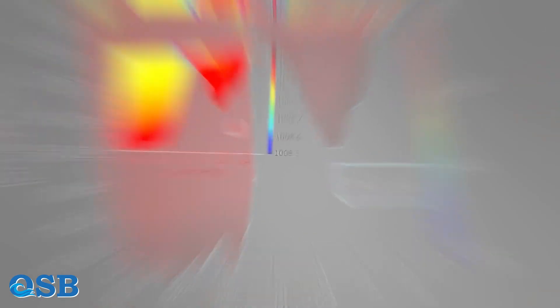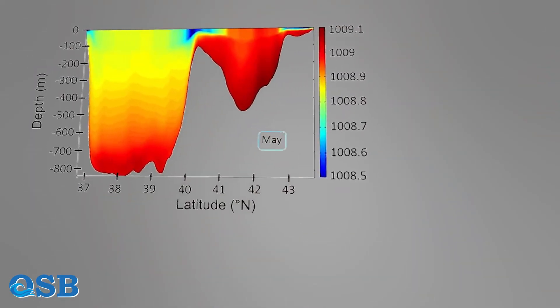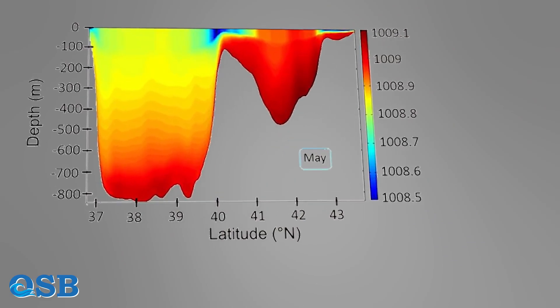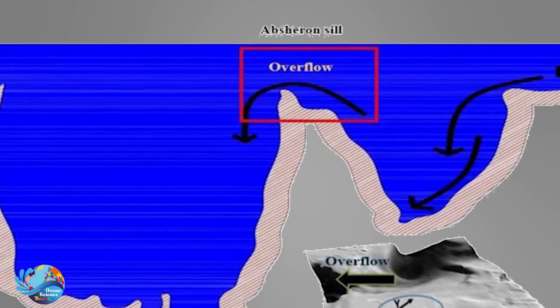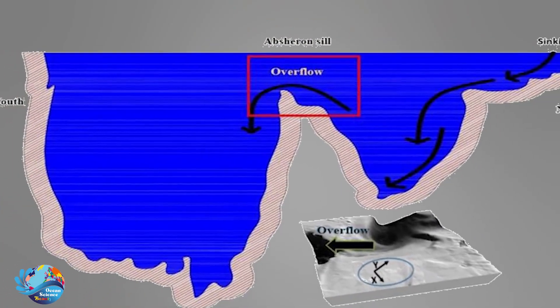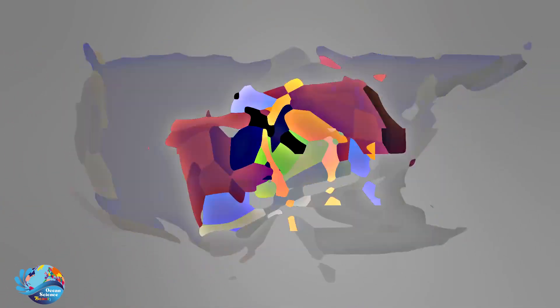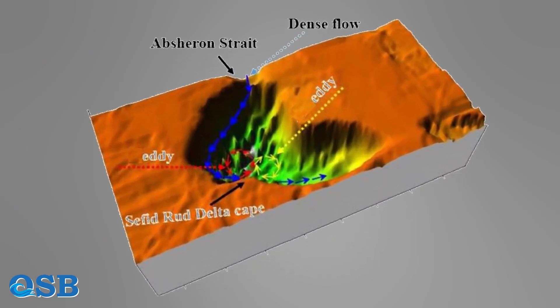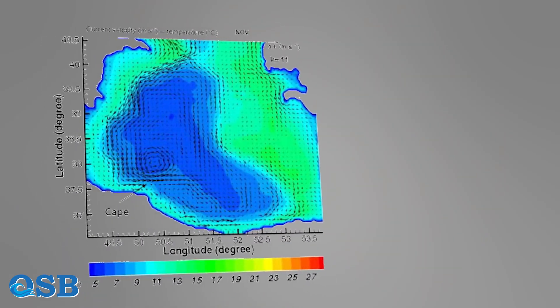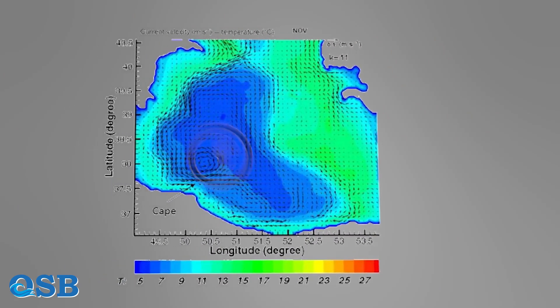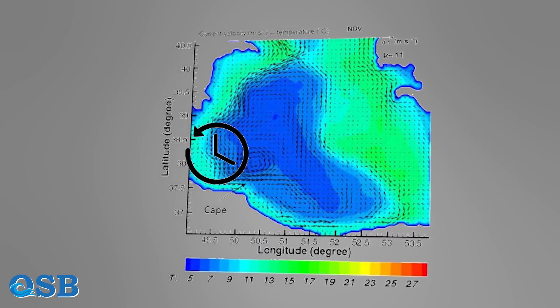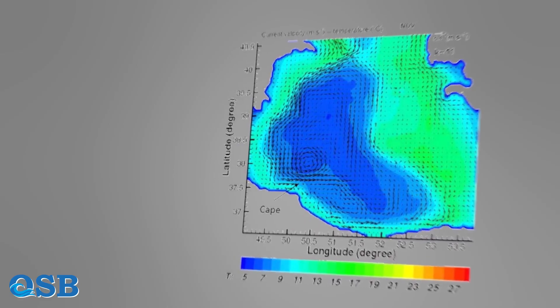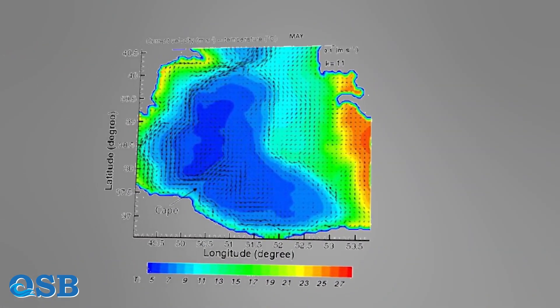This current fills the middle basin and then moves to the southern basin through the Apsheron Strait. We name this dense flow an overflow, like the Denmark Strait overflow. After entering the southern basin, it moves to a higher depth — more than 500 meters — as it is heavier, and creates a counter-clockwise circulation.